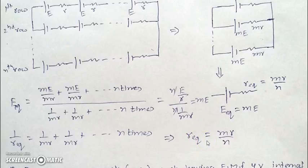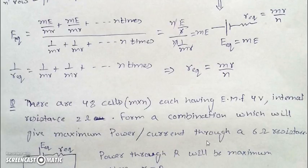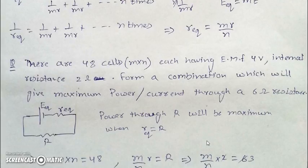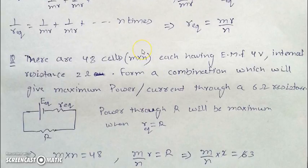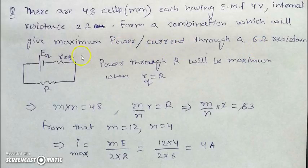There is a theorem called the Maximum Power Transfer Theorem: the power through a resistance is maximum when the external resistance equals the internal resistance of the equivalent cell. So for maximum power, R_equivalent of the cell combination must equal the external resistance R.